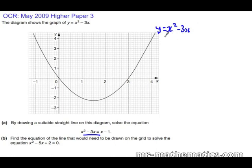So y equals x squared minus 3x has been drawn and we need to solve x squared minus 3x equals x minus 1. You can see that y has been replaced by x minus 1. So that is the graph we will draw.